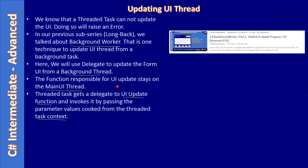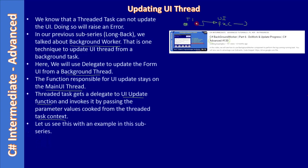We are talking about two threads: one is the background thread T1, and the other is the UI thread. A function Fx exists on the UI thread which takes care of updating the UI. What T1 will do is cook or form all the parameters, then through a delegate make a call to the function responsible for updating the form UI. Let us see this with an example in this sub-series.